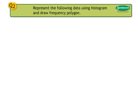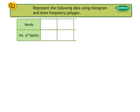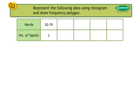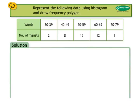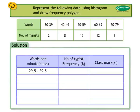Number 2: represent the following data using a histogram and draw a frequency polygon. 30–39 words typed by 2 typists; 40–49 words by 8 typists; 50–59 words by 15 typists; 60–69 words by 12 typists; 70–79 words by 3 typists. For the solution, prepare a continuous frequency table.